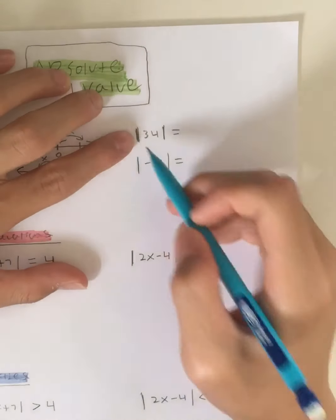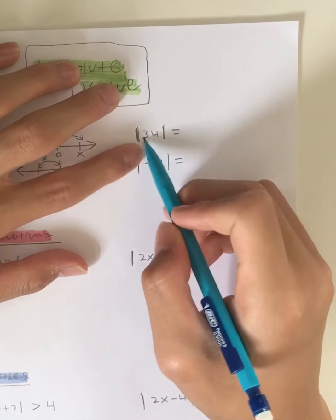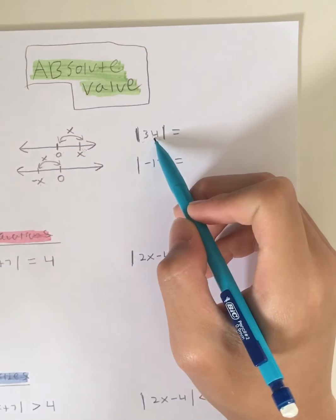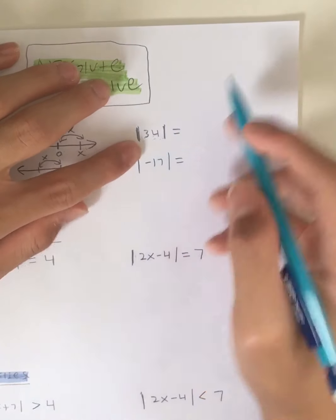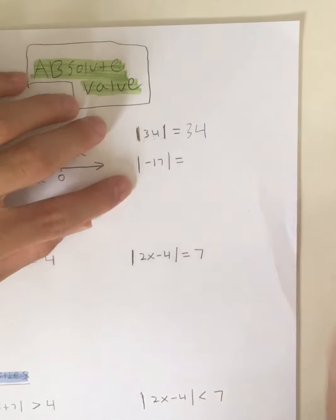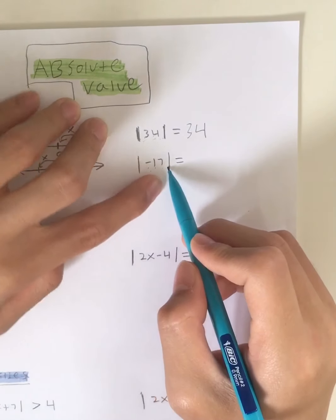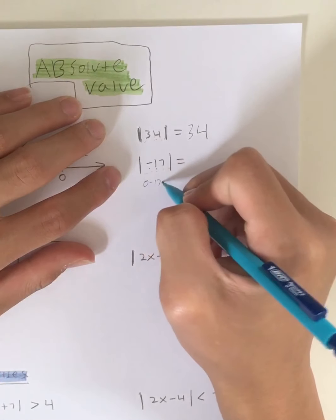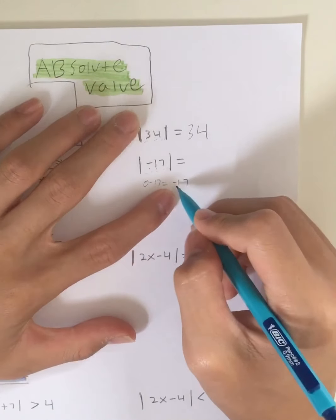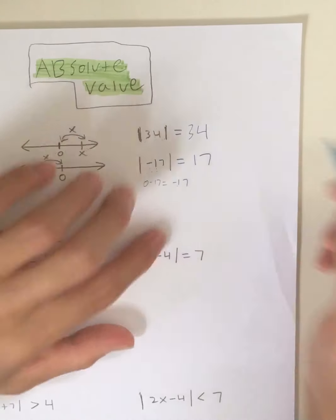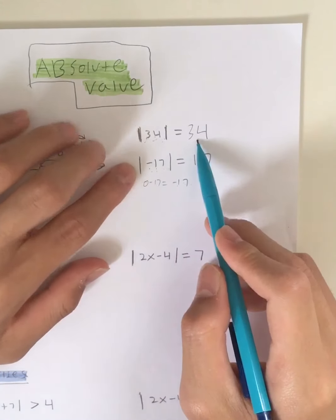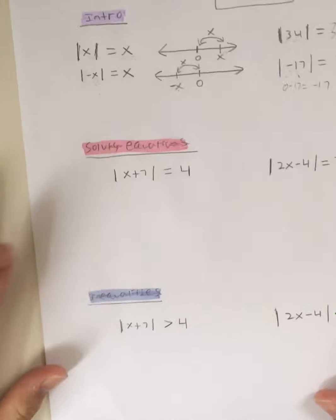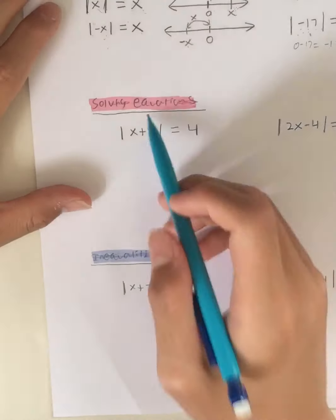I have two examples. The absolute value of 34: the difference between 34 and 0 is 34, so the absolute value of 34 is positive 34. On the other hand, the absolute value of negative 17: 0 minus 17 is negative 17, and the positive version of negative 17 is 17. Therefore the absolute value of negative 17 is 17.